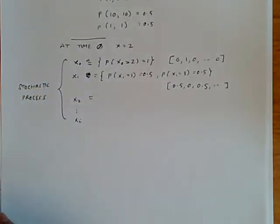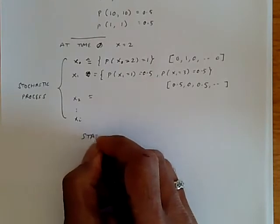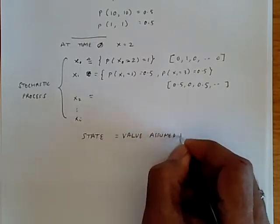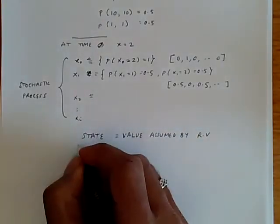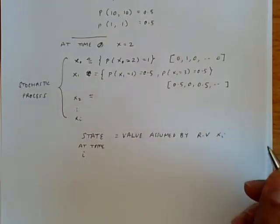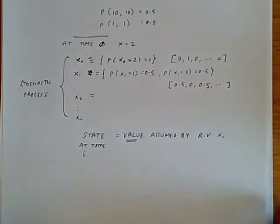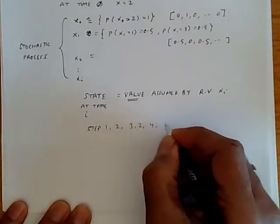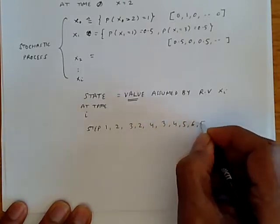What is moving over here? What's actually happening? We really don't actually have a person who's moving. What we have instead is that we can think of the stochastic process as having a particular state. And a state is the value assumed by the random variable. To be more precise, the state at time i is a value assumed by random variable x sub i. It's the value, it's not a probability. So to be very precise about this, let us say that the person went from step 1 to step 2, to 3, to 2, to 4, to 3, to 4, 5, 6, 5, et cetera.